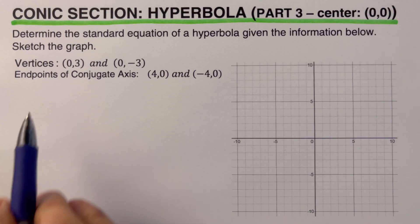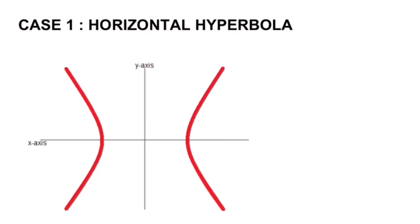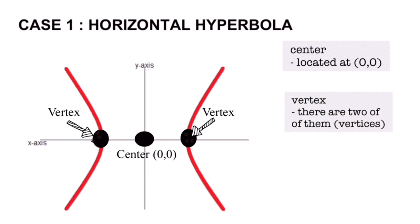Before we jump into this example, let's have a review on the parts and the two cases of a hyperbola with center at (0, 0). This hyperbola is called the horizontal hyperbola because the graph, which is in red, is touching the horizontal axis. The first part is the center, located at (0, 0), or at the point of origin. Another part is the vertex — there are two of them, and we call them vertices.